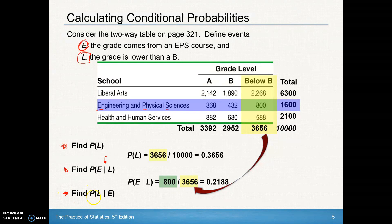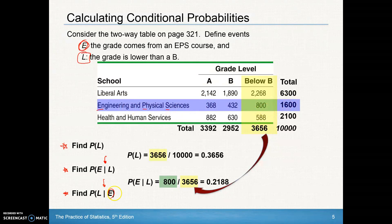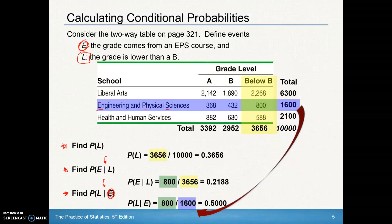For the probability of L given E — the probability that the grade is lower than B given the grade comes from an EPS course — since I'm given an EPS course, I now read horizontally. Given that I'm in the EPS row, the probability that the grade is lower than a B is 800 out of 1,600, because I'm reading horizontally. That gives us 800 out of 1,600, or 0.5.